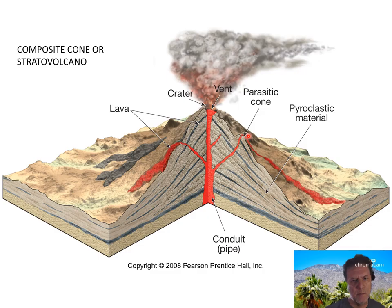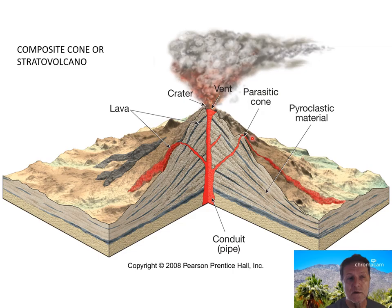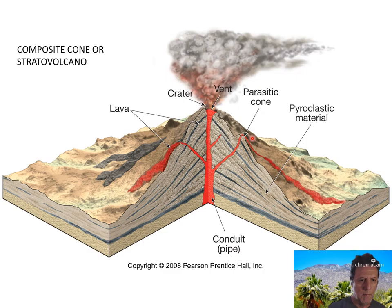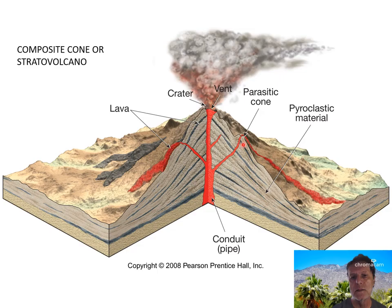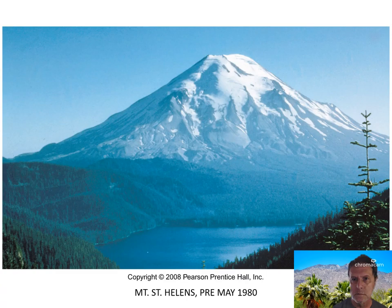Here's something we call a parasitic cone. A parasite is an organism that lives on or within another organism and takes nutrients from that host — like a tick that latches onto you and sucks blood. A parasitic cone is a smaller cone that grows on the side of a large volcano, taking some of the lava away from the main vent and building itself up on the side of the bigger host volcano.